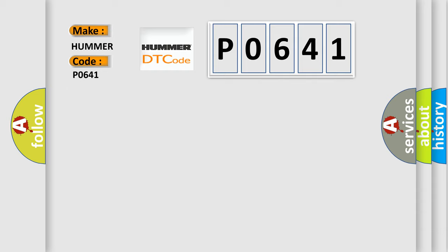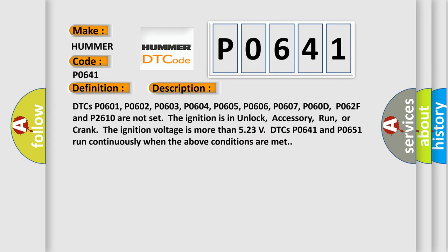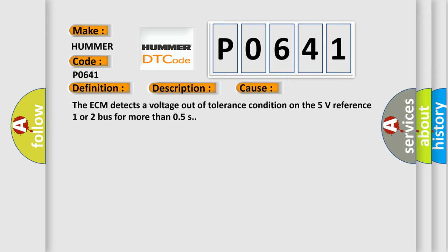The basic definition is: 5 Volts Reference 1 Circuit. DTCs P0601, P0602, P0603, P0604, P0605, P0606, P0607, P060D, P062F, and P2610 are not set. The ignition is in unlock, accessory, run, or crank. The ignition voltage is more than 5.23 volts. DTCs P0641 and P0651 run continuously when the above conditions are met. This diagnostic error occurs most often when the ECM detects a voltage out-of-tolerance condition on the 5 volts reference 1 or 2 bus for more than 0.5 seconds.